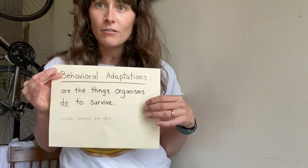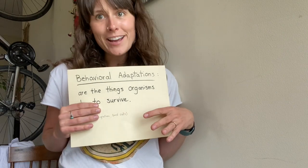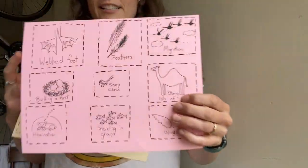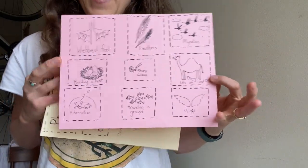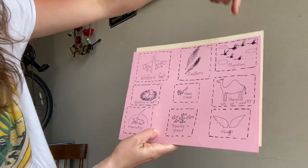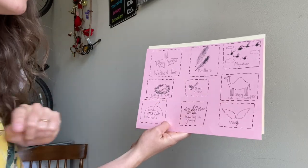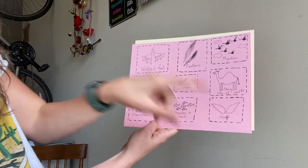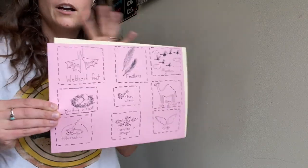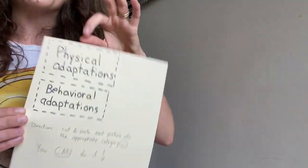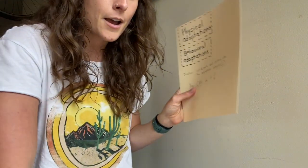I created this sort because I couldn't find anything online comparable to exactly what I wanted, so I made my own, and I'm going to send you guys a link as well. If you don't have a printer, you don't have to print this out — you could turn it into an assignment where you draw your own sorting game. We're going to sort the differences between behavioral and physical adaptations. We've got webbed feet, feathers, migration, building a nest, sharp claws, storing lots of water, hibernation, traveling in groups, and wings. We're going to cut these out, then break them down into one of those two categories and put them where they belong: physical adaptations and behavioral. I'm going to go get scissors, we'll speed this up, and then we'll sort them together.